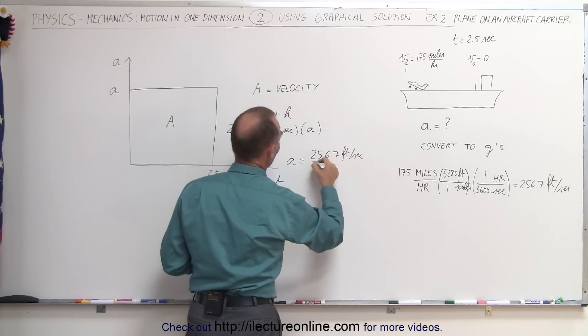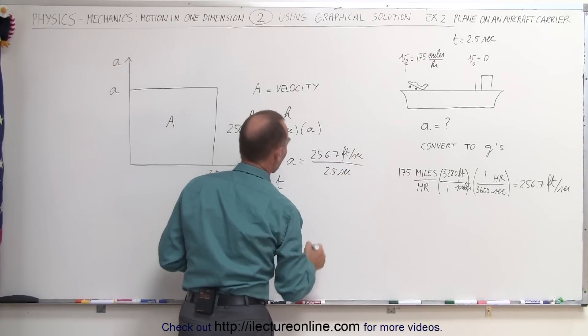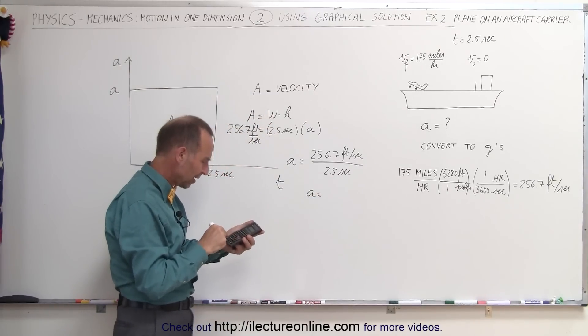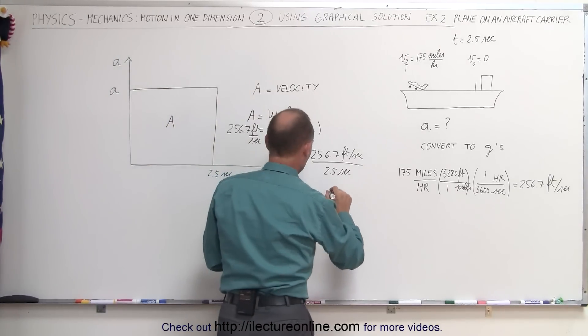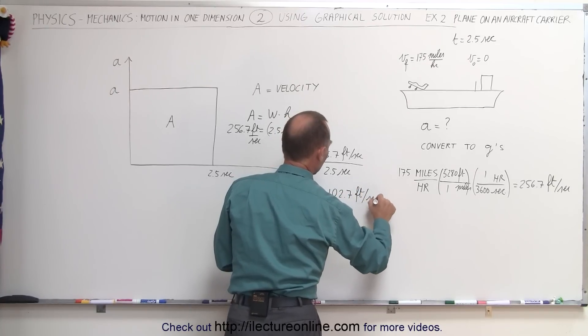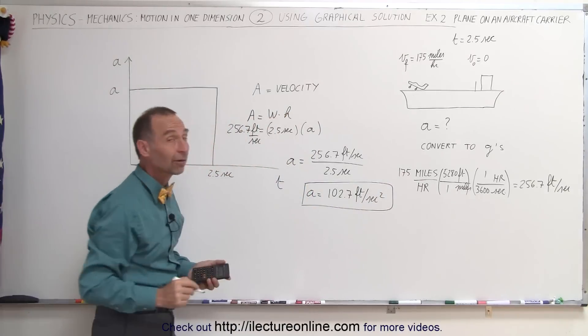Which means that the acceleration in this equation is equal to 256.7 feet per second divided by 2.5 seconds. That means we have an acceleration equal to, divide this by 2.5, and we get 102.7 feet per second squared. So that would be the acceleration of that aircraft on that aircraft carrier.